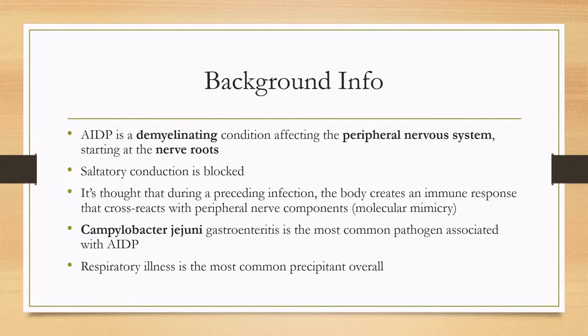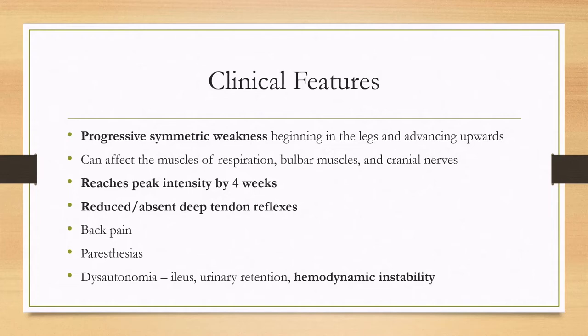Campylobacter jejuni gastroenteritis is the most common pathogen associated with AIDP, although respiratory illness is the most common precipitant overall. Clinically, it presents as a progressive symmetric weakness that typically begins more distally in the legs and then advances upwards. It can affect the muscles of respiration, the bulbar muscles, and the cranial nerves as it moves upwards, reaching peak intensity by four weeks.